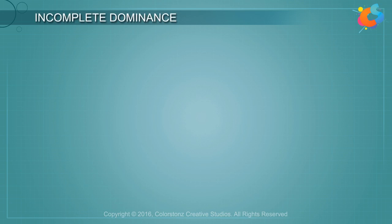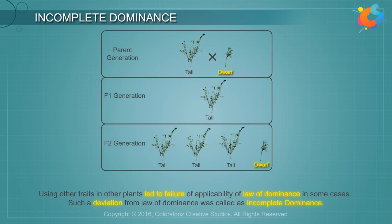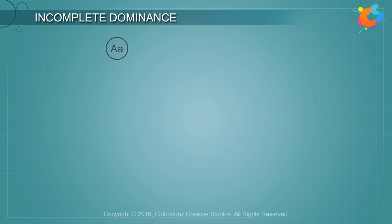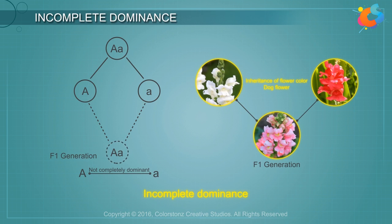INCOMPLETE DOMINANCE: The trend of recessive characters disappearing in the first generation and reappearing in the next was valid when experiments were performed on pea plants. But using other traits in other plants led to failure of the law of dominance in some cases. Such a deviation was called INCOMPLETE DOMINANCE — when neither allele is completely dominant and the F1 hybrid is intermediate between the two parents.